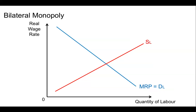Now the fact that it's a bilateral monopoly means that the buyer of the labor is a monopsonist. We can assume that there is one firm who is purchasing all the labor in this market. What that means is the monopsonist is going to have a marginal factor cost curve which has a steeper gradient than the supply curve of labor. The reason why it is is because to employ each additional unit of labor,